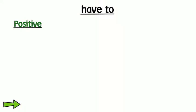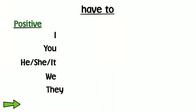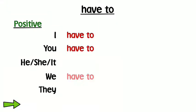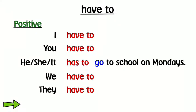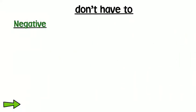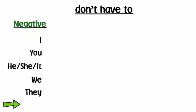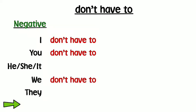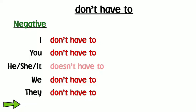We form positive sentences with have to like this. We use have to for I, you, we and they. We use has to for he, she and it. We form negative sentences with have to like this. We use don't have to for I, you, we and they. We use doesn't have to for he, she and it.